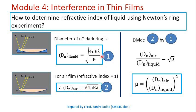Let's call this equation 1 and this equation 2. If we divide equation 2 by equation 1, we can write (D_n)_air divided by (D_n)_liquid equals square root of μ.